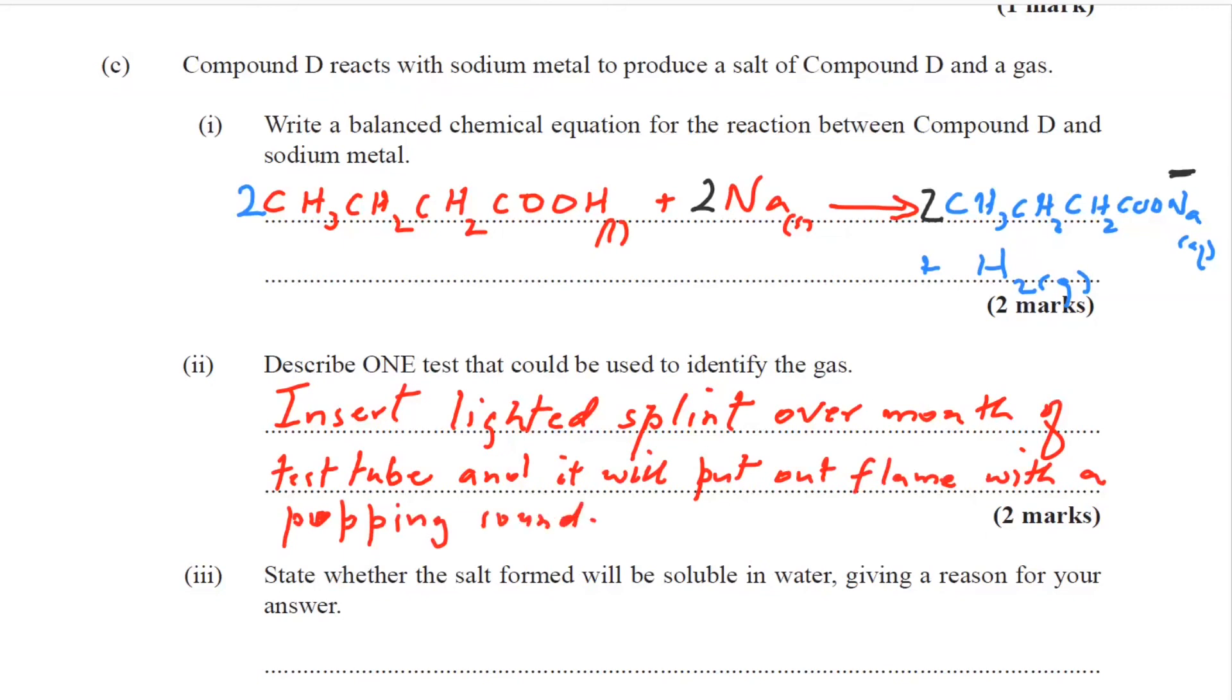So we'll insert a lighted splint over the mouth of the test tube, and it will put out the flame with a popping sound, or with a squeaky pop, depending on the amount of the gas that's present. And that tells us that hydrogen is there, because hydrogen is explosive.